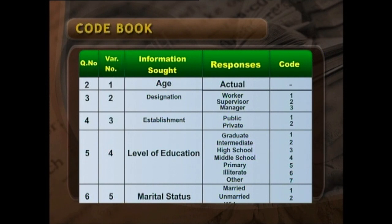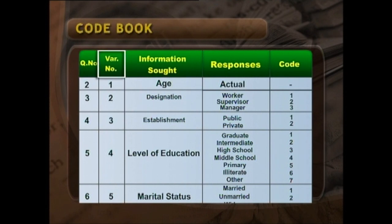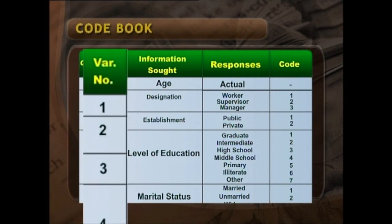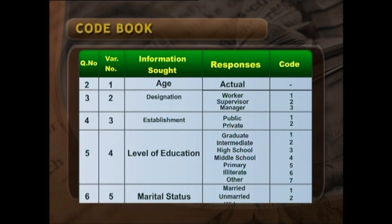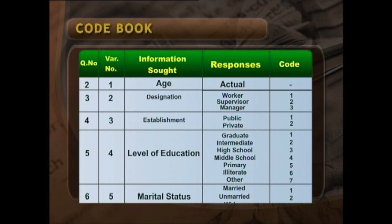Variable number is information for further processing. Since we do not have consecutive question numbers, variable numbers must be given consecutively from beginning to end — one, two, three, four, and so on. In a question, there may be sub-questions, and sub-questions may have two variable numbers, which you also have to note. In the third column, we give information short — that is, by asking a question, what kind of information you are seeking. So in very brief terms, we convey the information short. For factual data, you can see: age, designation, establishment.